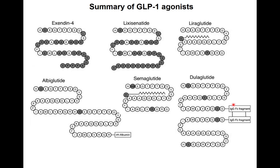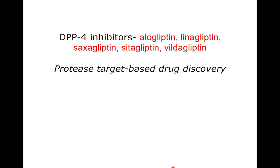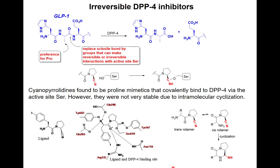In the next section we will look at the alternative approach using small molecules to affect GLP-1 lifetime: inhibiting the enzyme DPP-4 that is responsible for GLP-1 cleavage. Looking at the first three amino acids in the GLP-1 sequence, this is the position cleaved by DPP-4, producing inactive fragments.